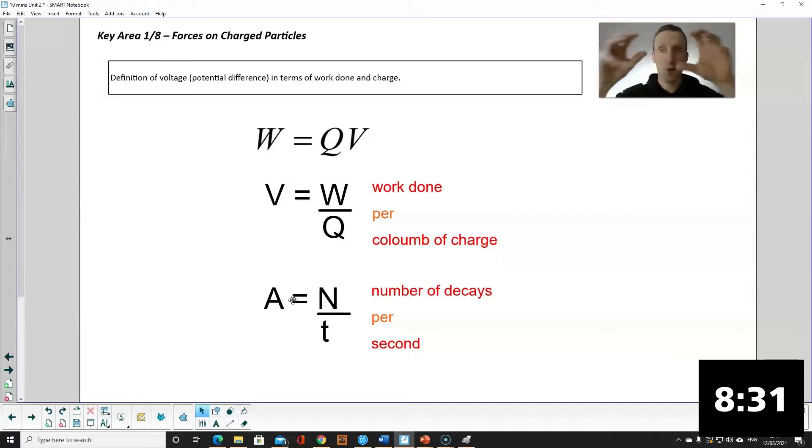Activity, number of decays per second. Frequency, number of waves per second. Acceleration, change of velocity per second. This is a good way of remembering how we define certain terms. And what this means is if you have a 9 volt electric field that means you'll have 9 joules of work done per coulomb of charge.